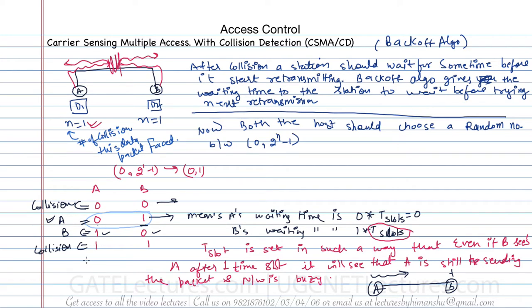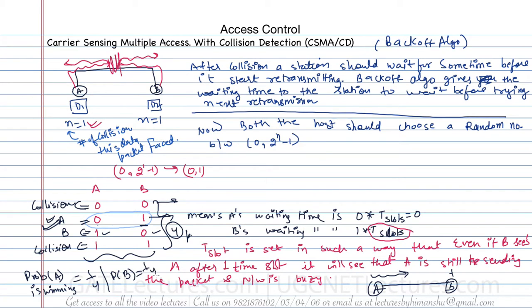After the first iteration of this algorithm, out of four possibilities, what is the probability of A winning the collision? Only in one case is A winning, so the probability of A winning is 1/4. Similarly, the probability of B winning is 1/4. The probability of collision again is 2/4, which equals 1/2 — there is still a fifty percent probability that both stations will collide again.